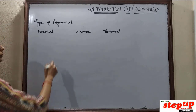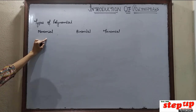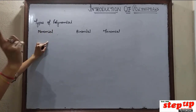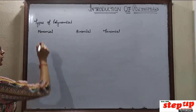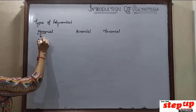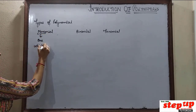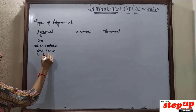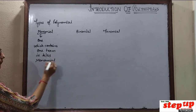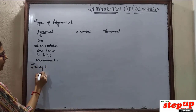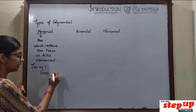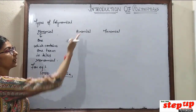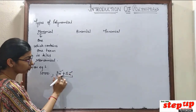Next, we will move to types of polynomial. Polynomials are of two types. One is by simple type: monomial, binomial, trinomial. The other is on the basis of degree — we will study that next. First, monomial — as the name suggests, mono means one. Which contains one term is known as monomial. For example, take any number like 1000 — that is monomial. Now if you take 3x plus 5x, what will this be? This will be monomial.